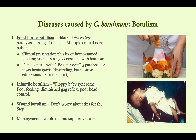Guillain-Barré syndrome starts at the legs and works upward — an ascending paralysis. The way to remember it: starts at the ground, ends at the brain. Botulism, by contrast, is a descending paralysis starting at the face. Symptoms include diplopia, dysarthria, ophthalmoplegia, impaired gag reflex, and ptosis. Autonomic symptoms can also appear.